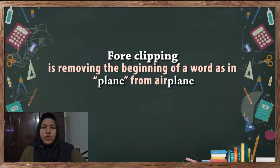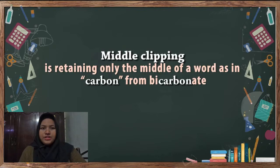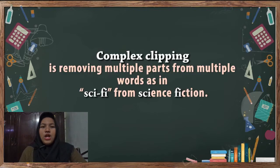Second, foreclipping: foreclipping is removing the beginning of a word, as in plane from airplane. Third, middle clipping: middle clipping is retaining only the middle of a word, as in carb from carbonate. Fourth, complex clipping: complex clipping is removing multiple parts from multiple words, as in sci-fi from science fiction.